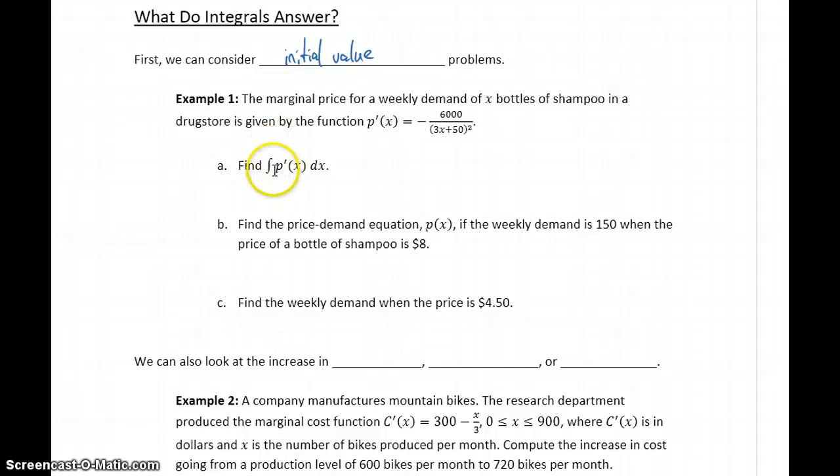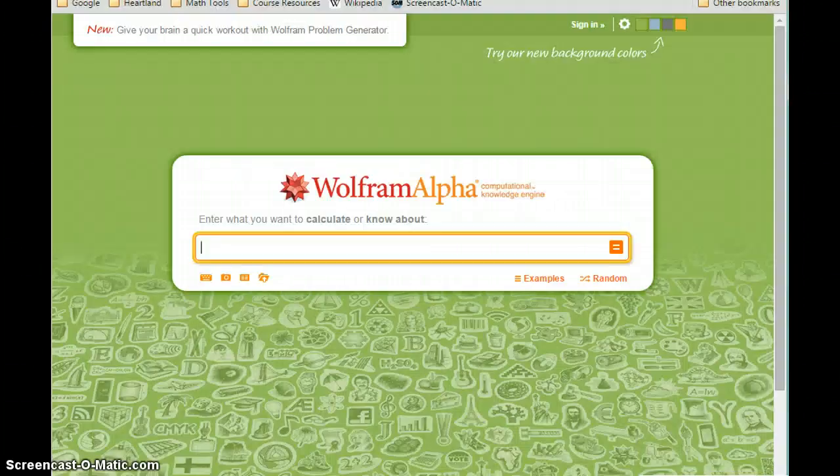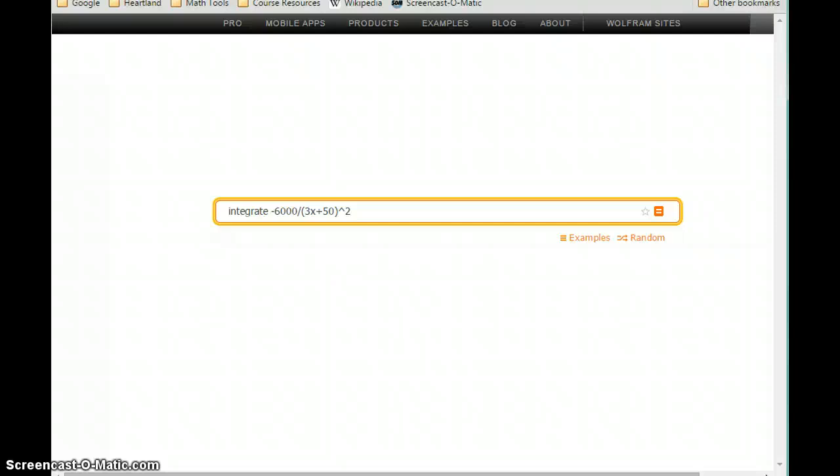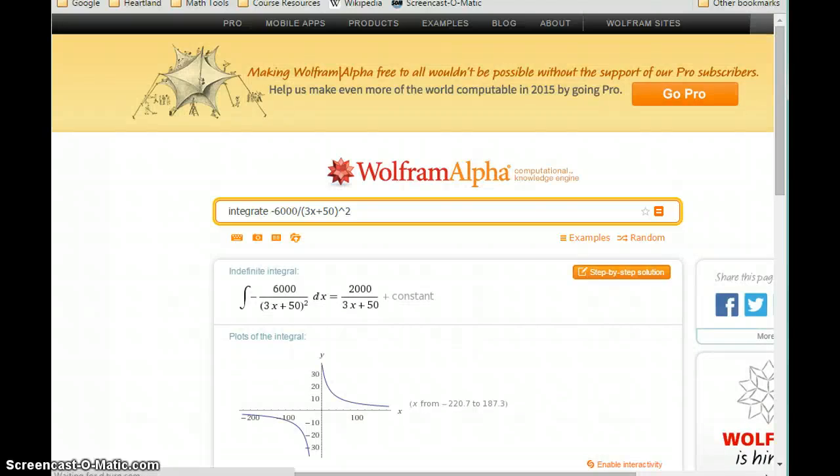So in this first example, we want to find the integral of p prime of x. So when we find this integral, essentially what we're finding is the actual price demand function, p of x. So to integrate this function, we can pull up Wolfram Alpha and say integrate negative 6,000 divided by the quantity 3x plus 50 squared. So this gives us the result, 2,000 over 3x plus 50, plus some constant c.